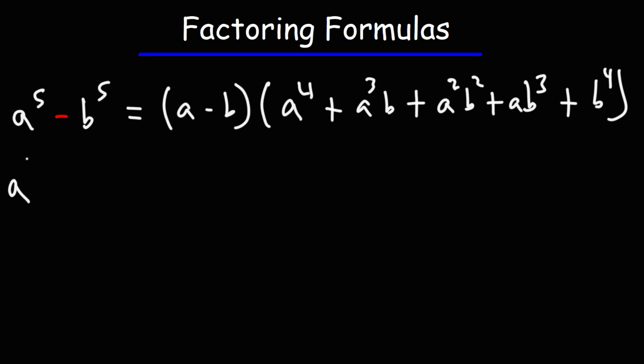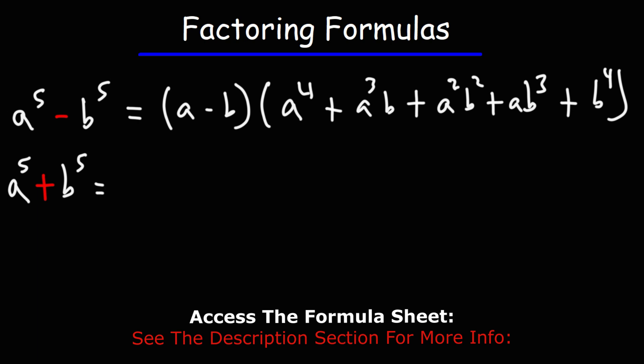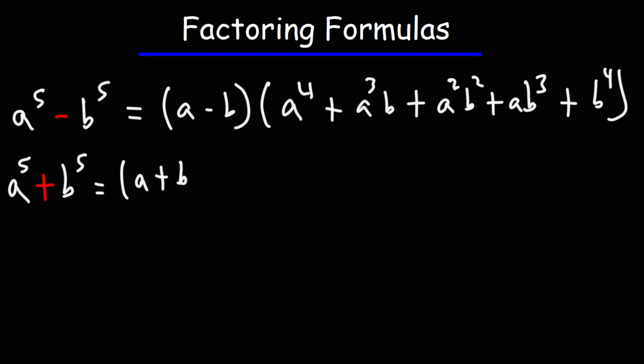Another one that's similar to this one is a to the fifth plus b to the fifth. It's similar to the previous one, but the signs are going to be different. So instead of a minus b, it's going to be a plus b. The next term will be the same, a to the fourth. And instead of plus a to the third b, it's going to be minus a cubed b.